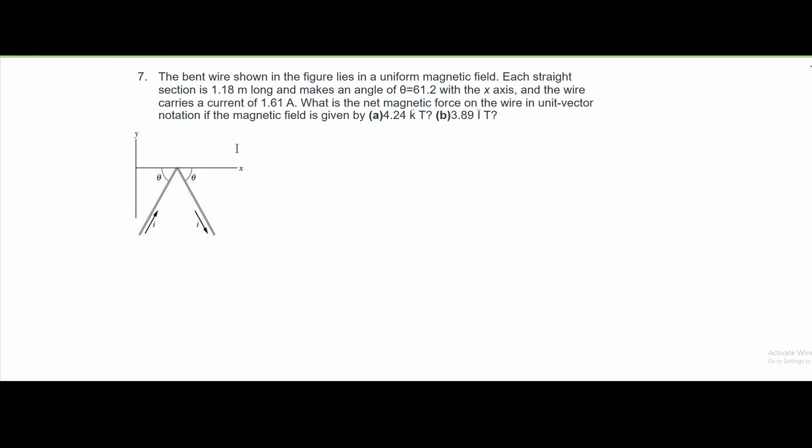The wire carries a current of 1.61 amps, and we're asked what is the net magnetic force on the wire in unit vector notation if the magnetic field is given by 4.24 k teslas.